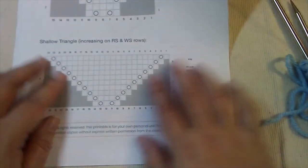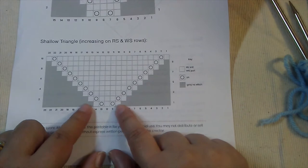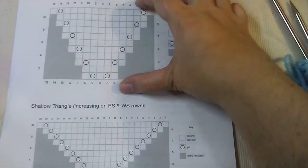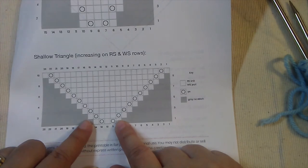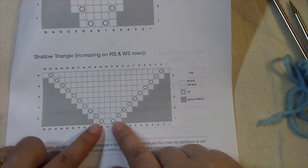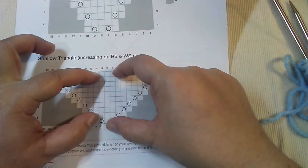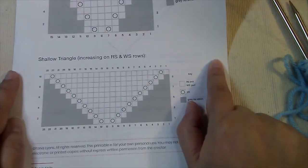But what if you don't like that deep shawl with the short wingspan and you want something that has a wider wingspan and not quite so much depth? There's one simple thing you can do to fix that. If you look here, you simply change the rate of increases. You can see right there in the example: this one provides a deep triangle, this one is much more shallow. All we've done is we've increased on every row—right side and wrong side—and that gives us a more shallow triangle and more length across at the top of the shawl.